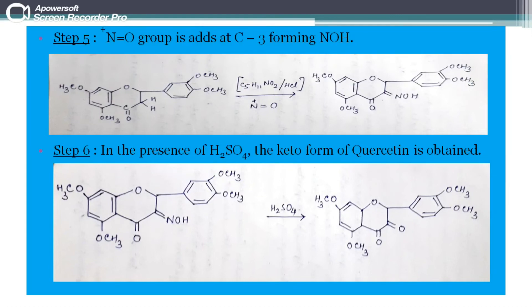The NO plus group adds at third carbon atom of heterocyclic ring as NOH group with a double bond with carbon.